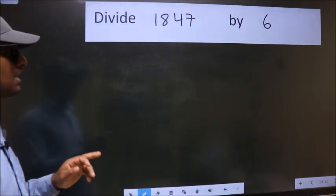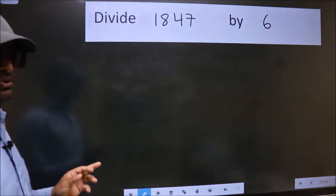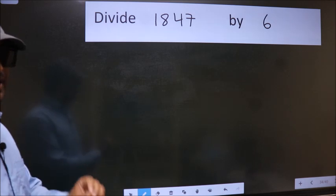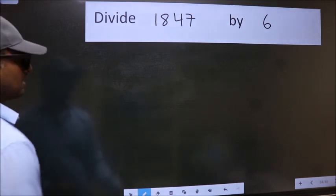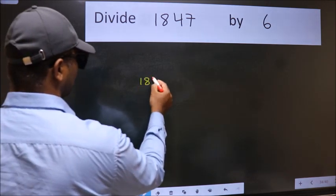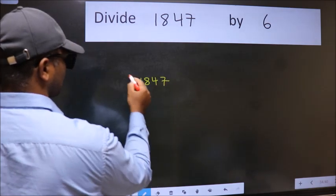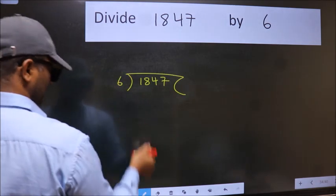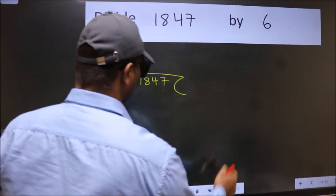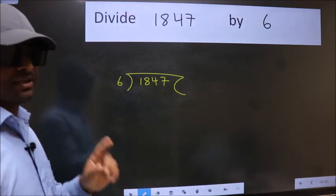Divide 1847 by 6. To do this division, we should frame it in this way. 1847 here, 6 here. This is your step 1.